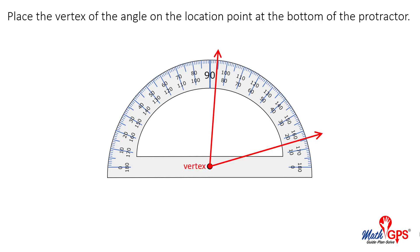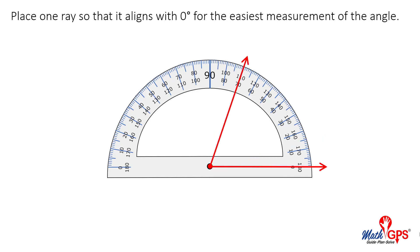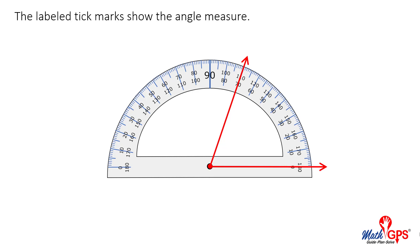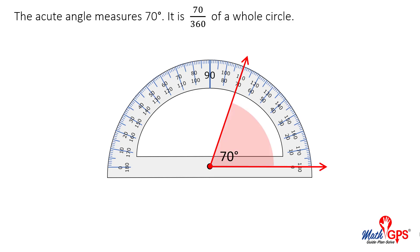To measure an angle, place the vertex of the angle on the location point at the bottom of the protractor. Place one ray so that it points to zero degrees for the easiest measurement of the angle. The labeled tick marks show the angle measures. The acute angle measures 70 degrees. It is 70/360ths of a whole circle.